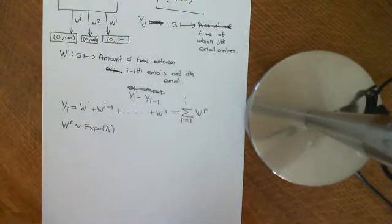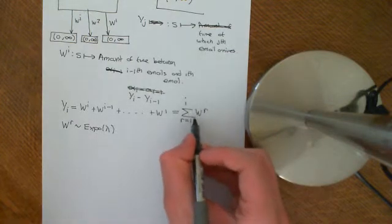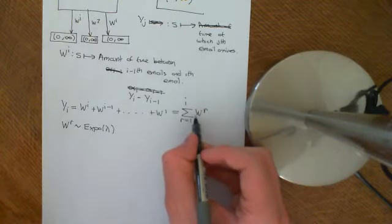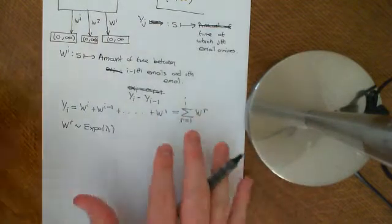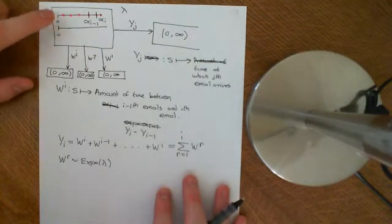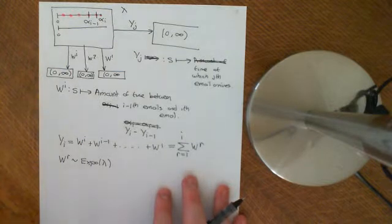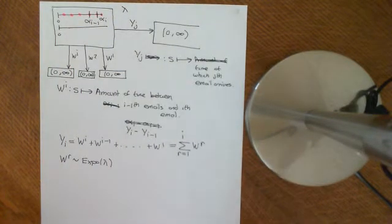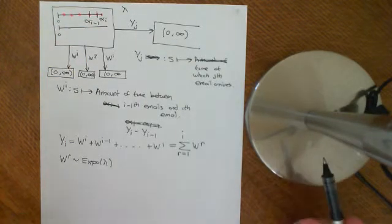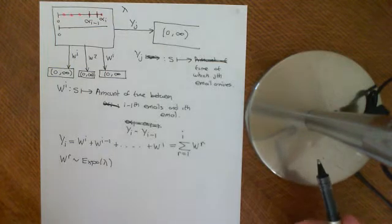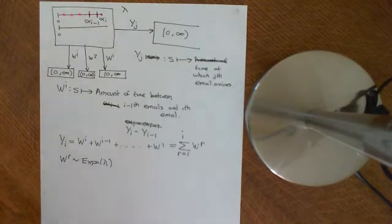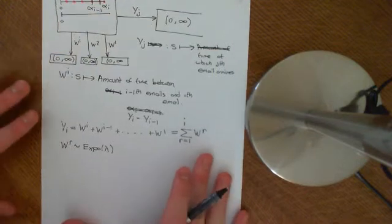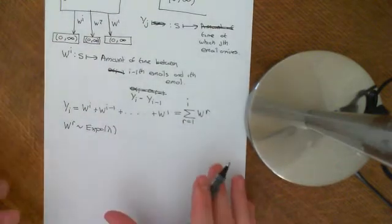We'll remember that wr is exponentially distributed with parameter lambda, which is what we saw in the previous video. So we are summing up a bunch of independent and identically distributed random variables. They are all identically distributed. Independence is something we haven't discussed so far. The reason they are independent is: should the amount of time between 0 and the first email affect the amount of time you have to wait for the second email? It shouldn't really, because of the memoryless property — independence follows from that. It's as though the problem has begun again; it doesn't matter what's happened previously.